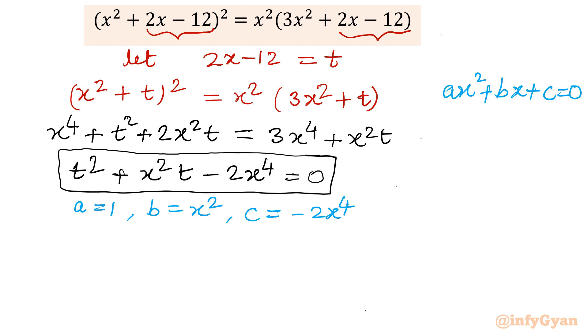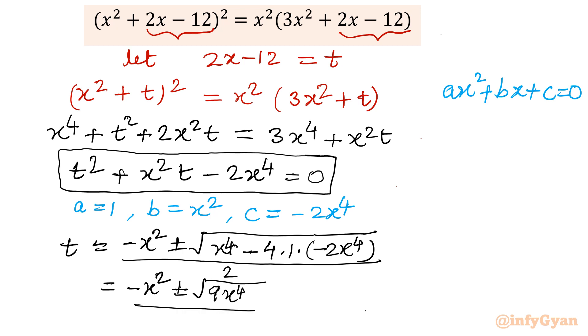Now let us consider quadratic formula. So I will write here, t is equal to minus b, so minus x square, plus minus square root b square, so x power 4 minus 4ac. So 4 times 1 times minus 2x power 4 divided by 2a, so 2.